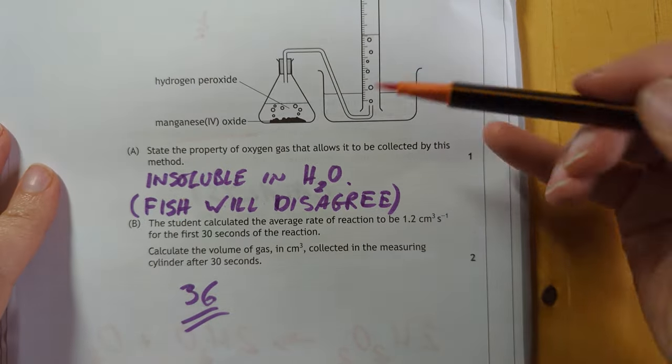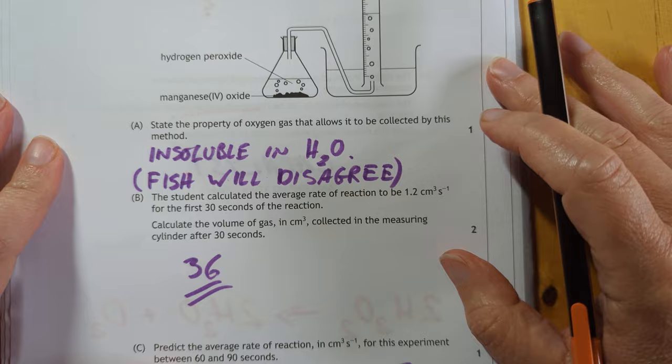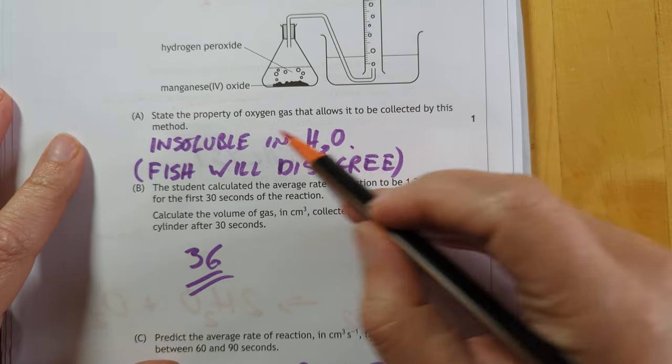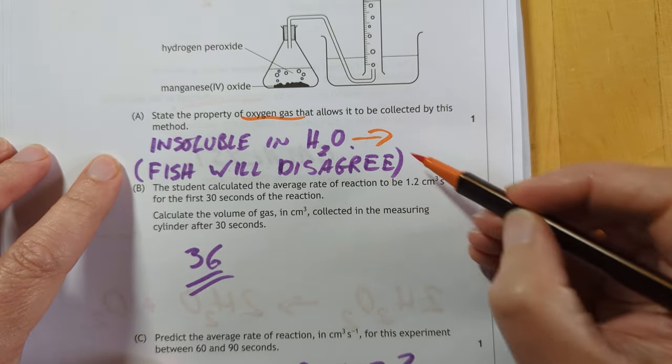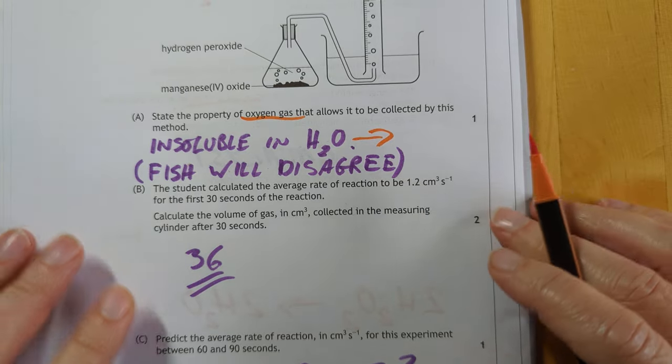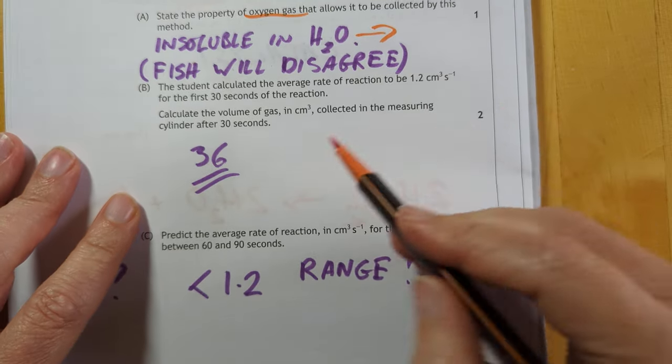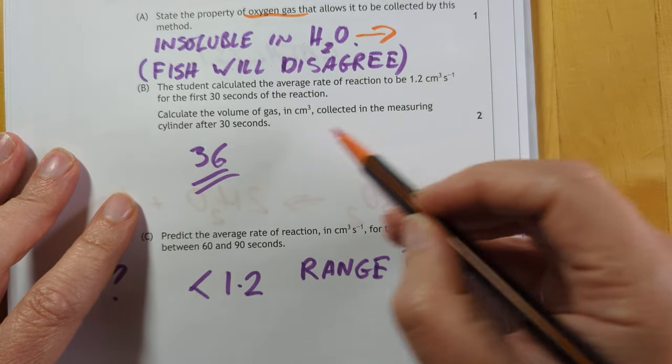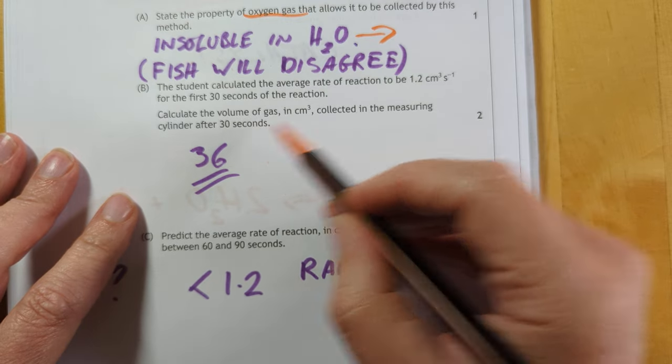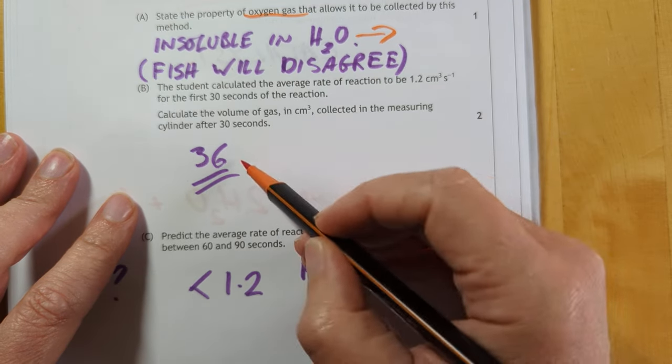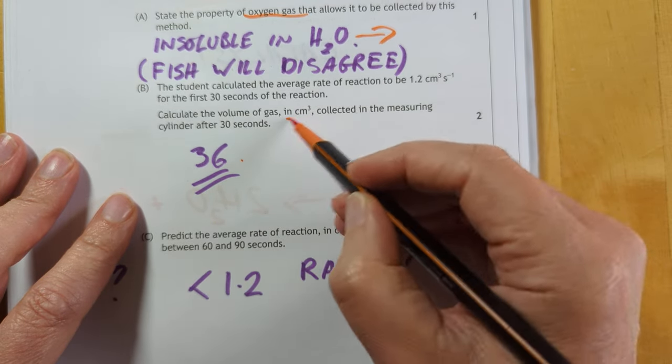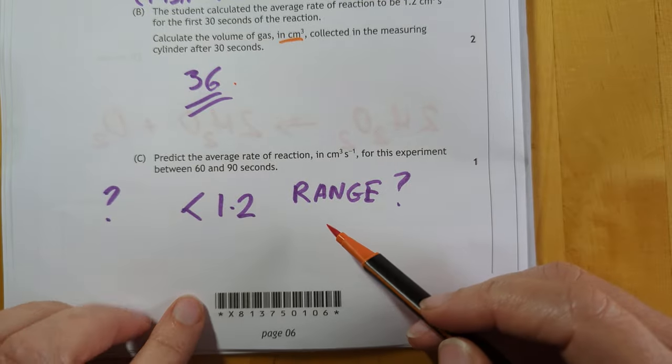We've got collecting oxygen here. Now, at National 5, the SQA tells us that oxygen gas is insoluble in water. So that's your SQA answer. As I joked about before, ask your nearest fish, they'll disagree. We've got to calculate the volume of gas collected. It's going to be 30 times 1.2, gives us 36. Don't put a unit. The unit's in the question.